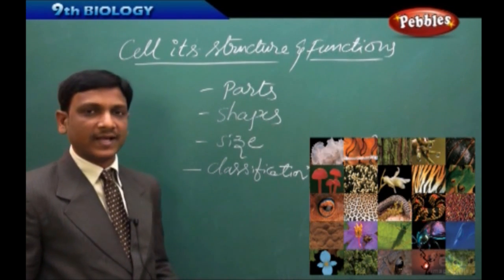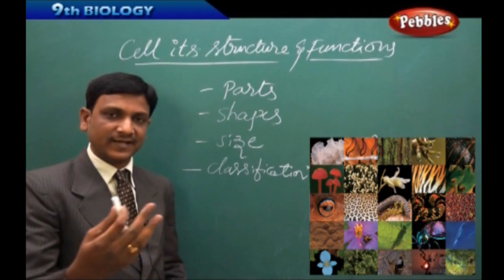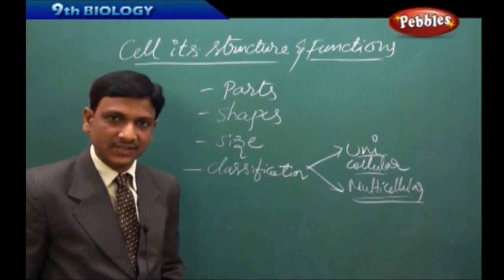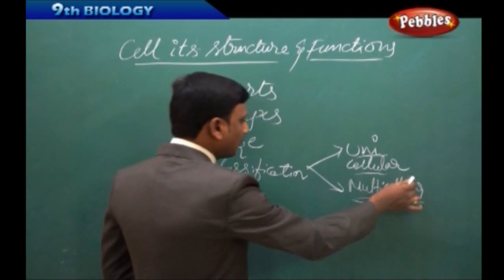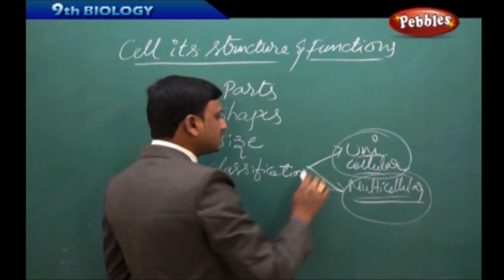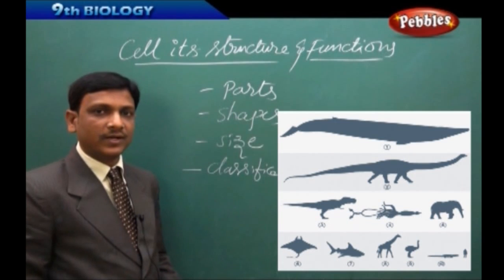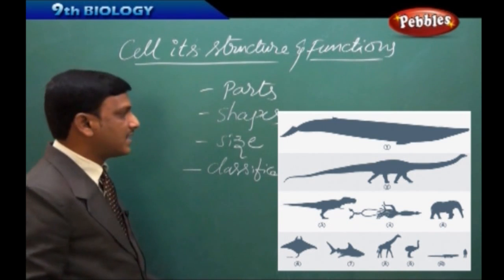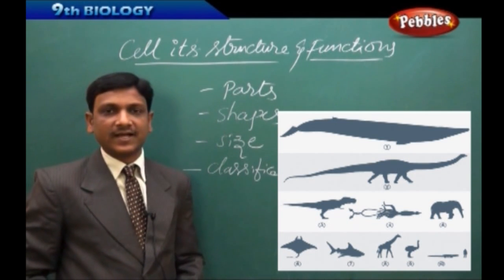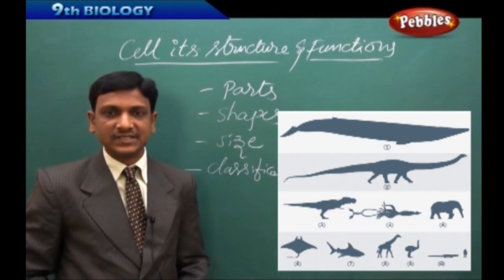So all these organisms, right from 10, 100, 1000 or million, all these organisms are called multicellular organisms. So this is the division of organisms, depending upon the number of cells they have. So these are the different kind of topics which we have learnt in our lower classes.